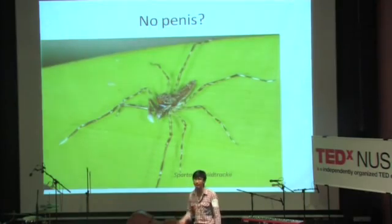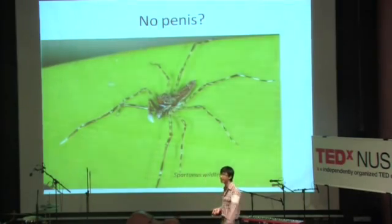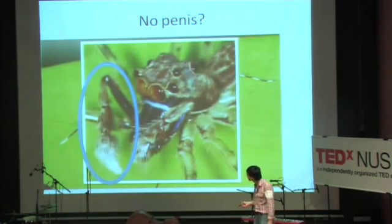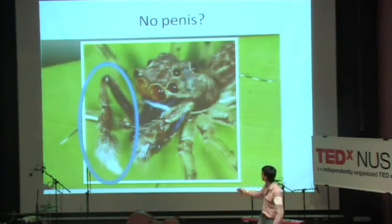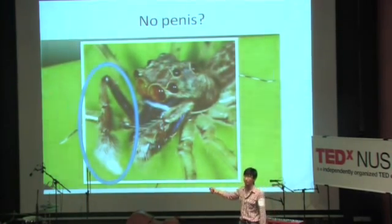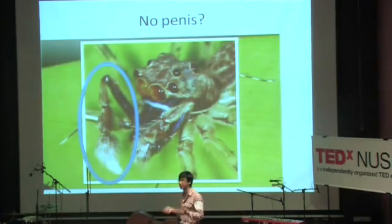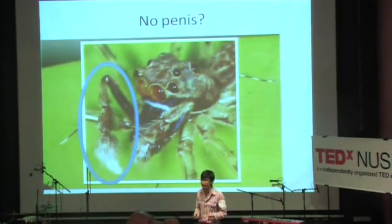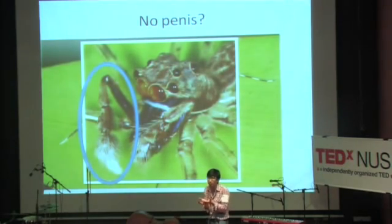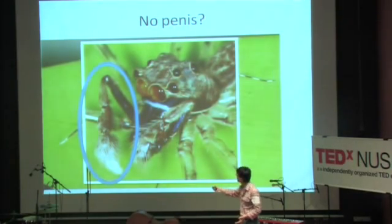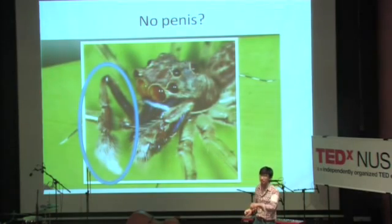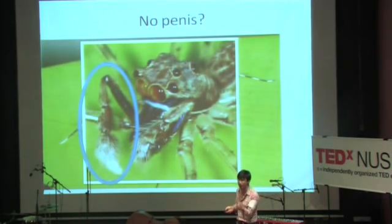What about animals with no penises? The spider — you all see spiders everywhere — do you know they have no penises? So how does the spider have sex? It has these specialized sex arms called pedipalps. When it's sexually mature and wants to mate, it weaves a little specialized silken bowl and masturbates into the bowl, then uses these arms to suck up the sperm. And when it comes to the deed itself, it uses the arm too.